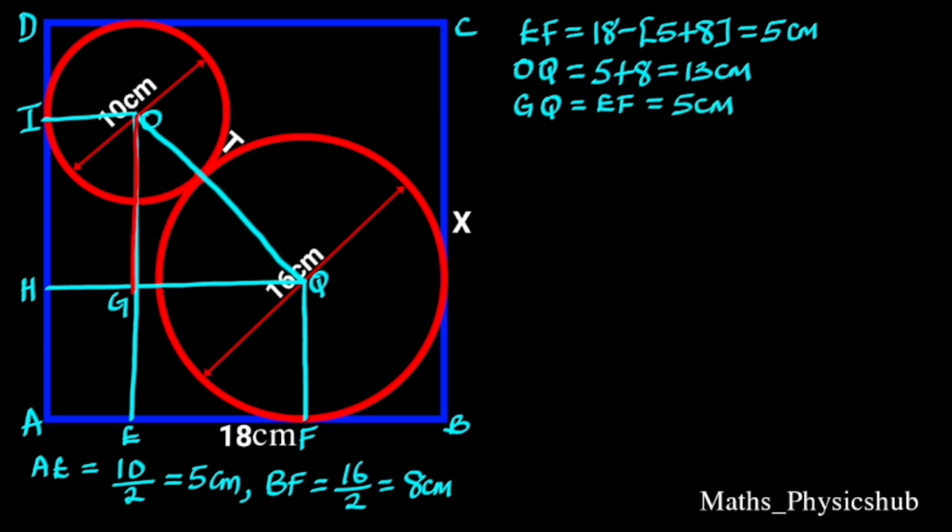Since triangle GOQ is a right angle triangle, we are going to use Pythagoras rule to find GO. From Pythagoras rule, OQ square equals GQ square plus GO square. Next we plug in the value of OQ and GQ in this formula. Doing so will give us 13 square equals 5 square plus GO square. 13 square is 169, and 5 square is 25, which follows that 169 equals 25 plus GO square.